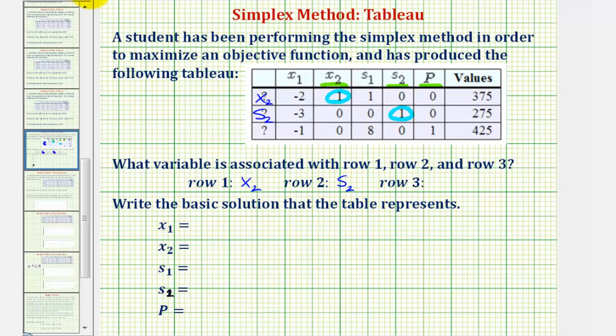Now looking at column p, notice how the one is in the third row. So the third row is associated with p.